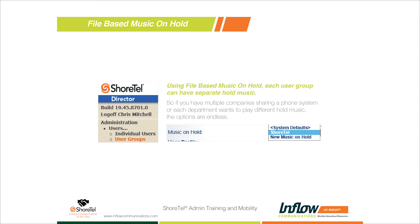Once you find the user group you want to change music on hold for, select that user group. On the right-hand side you'll see a Music on Hold dropdown. It should be set to System Default. If you've changed the system default to file-based, it'll already be playing file-based music. But in the dropdown you can change it to the ShoreTel default file that comes on the system, or your new custom file — New Music on Hold — so you can select which music plays when users in this group put callers on hold.